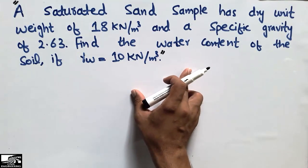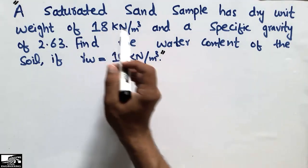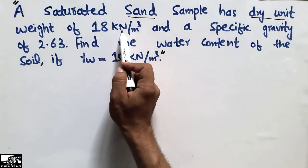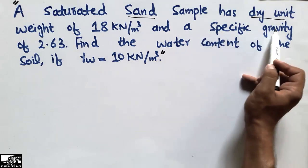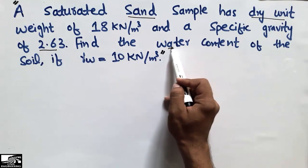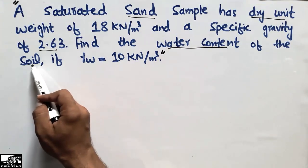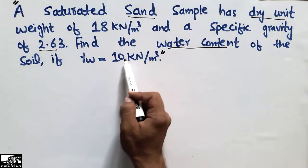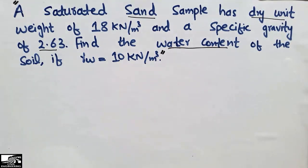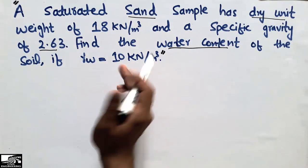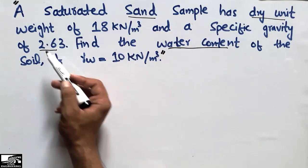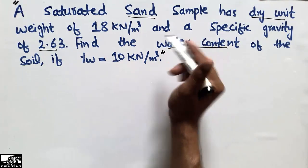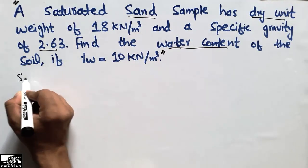This is the problem given to us and we want to find the unknown parameter. The problem states that a saturated sand sample has a dry unit weight of 18 kilonewton per cubic meter and a specific gravity of 2.63. We need to find the water content of this sand sample, given that the unit weight of water, γw, is 10 kilonewton per cubic meter.